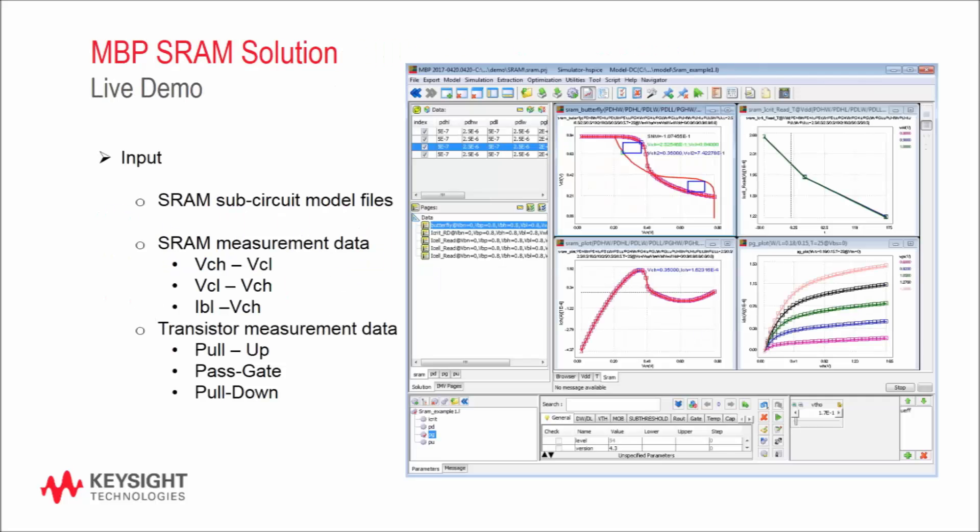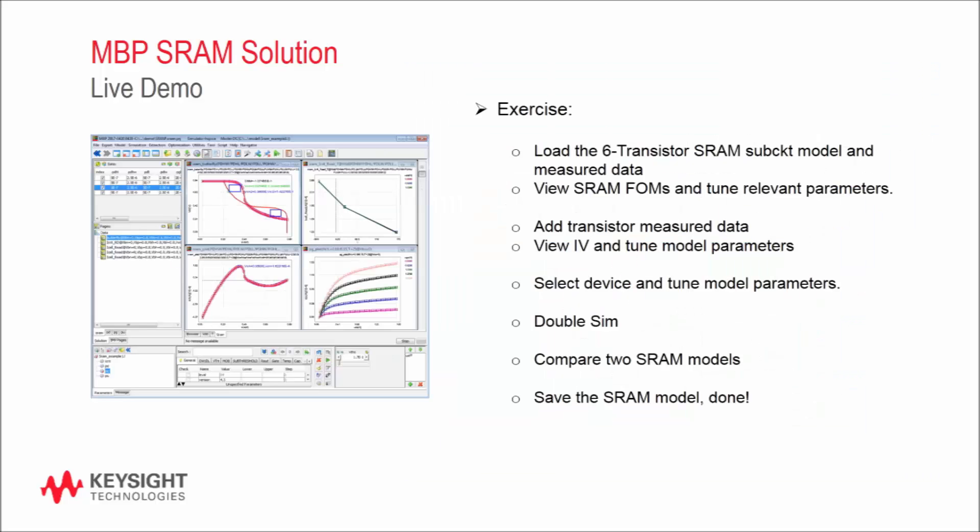So let's go ahead and switch to a live demo of MBP. I will be using one of the demo projects included in the MBP 2017 release. We are going to exercise the following steps: Load a SRAM sub-circuit model and data, view the butterfly and N-curve graphs, load each individual transistor IV data and tune model parameters, compare two SRAM models, and finally save the SRAM model back to a file.